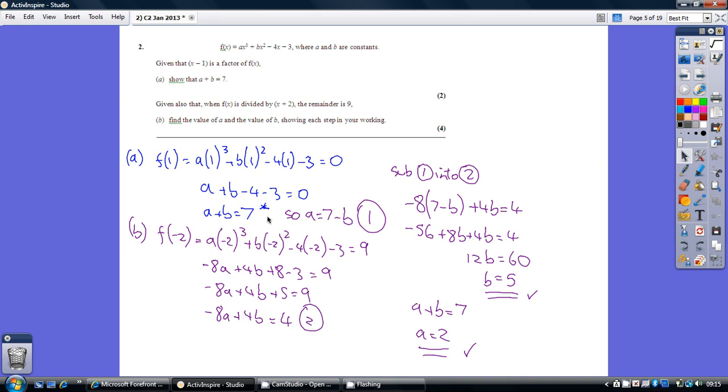So we have two equations, two unknowns, so we can solve this as a simultaneous equation by substitution. Taking our first one here, let's make a the subject by taking away b from both sides. Let's call this equation one.